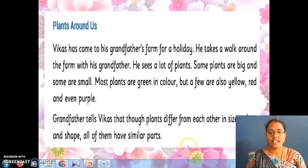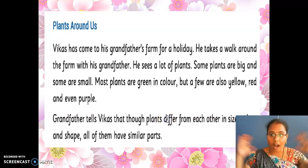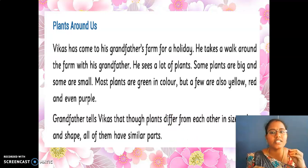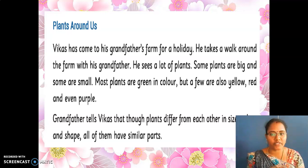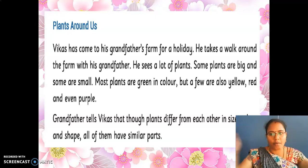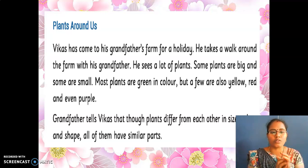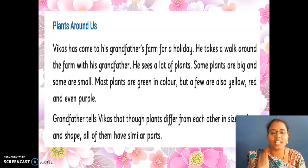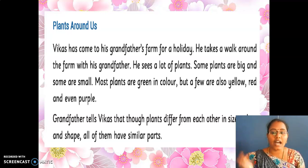Once again I am going to read it. Listen carefully. Plants Around Us. Vikas has come to his grandfather's farm for a holiday. He takes a walk around the farm with his grandfather. He sees a lot of plants. Some plants are big and some are small. Most plants are green in color but a few are also yellow, red and even purple. Grandfather tells Vikas that though plants differ from each other in size, color and shape, all of them have similar parts.